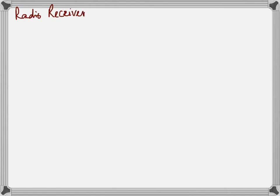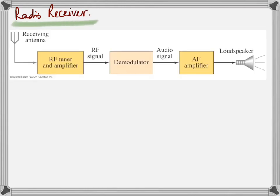For the radio receiver: the receiving antenna picks up signals, and an RF tuner — using a variable capacitor — selects a specific frequency. The RF signal is then demodulated to separate the audio from the carrier, followed by an AF amplifier, and finally the signal goes to the loudspeaker. That is radio broadcasting end-to-end.